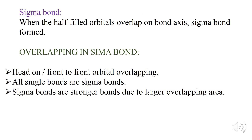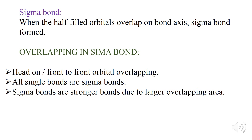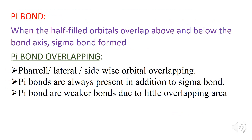Sigma bond: when the half-filled atomic orbitals overlap on the bond axis, a sigma bond is formed. The overlapping in a sigma bond is head-on or front-to-front overlapping of atomic orbitals. All single covalent bonds are sigma bonds. Sigma bonds are stronger bonds due to the greater overlapping area.